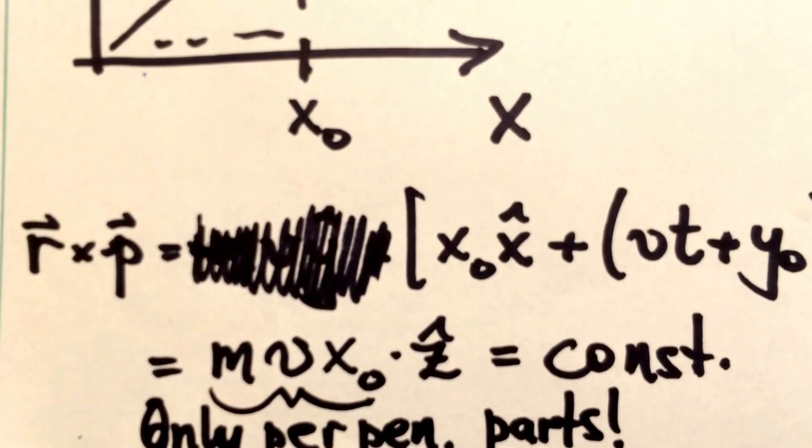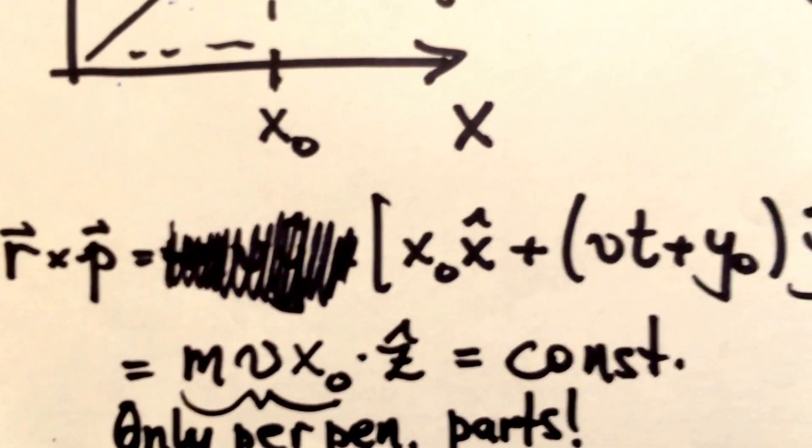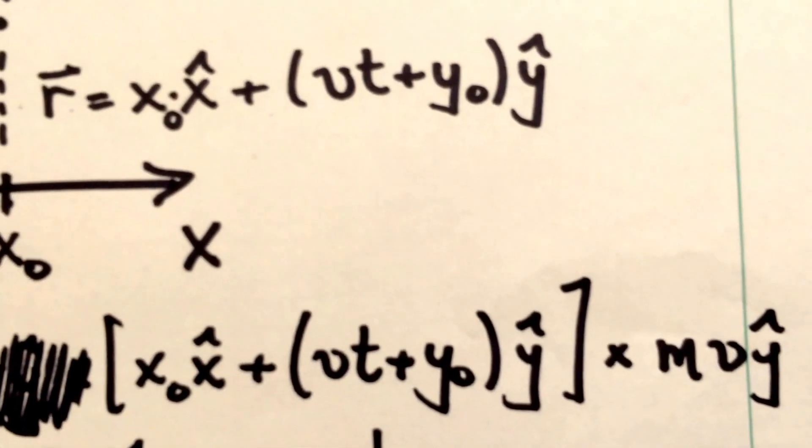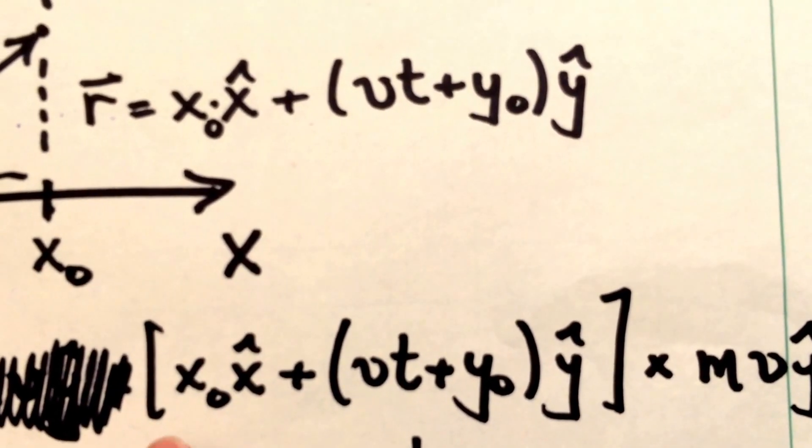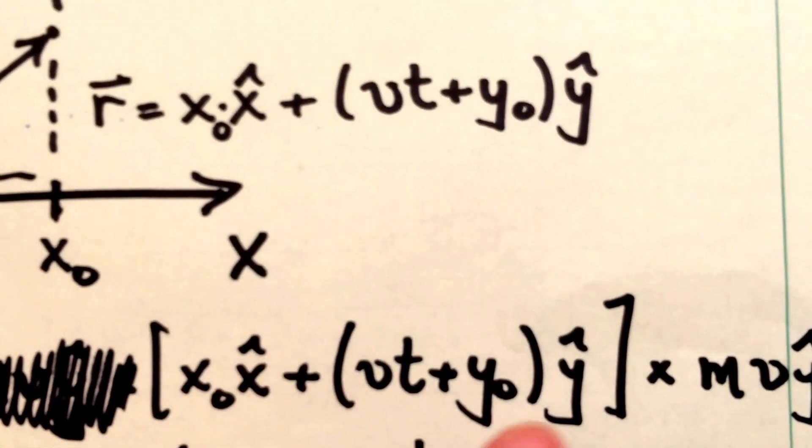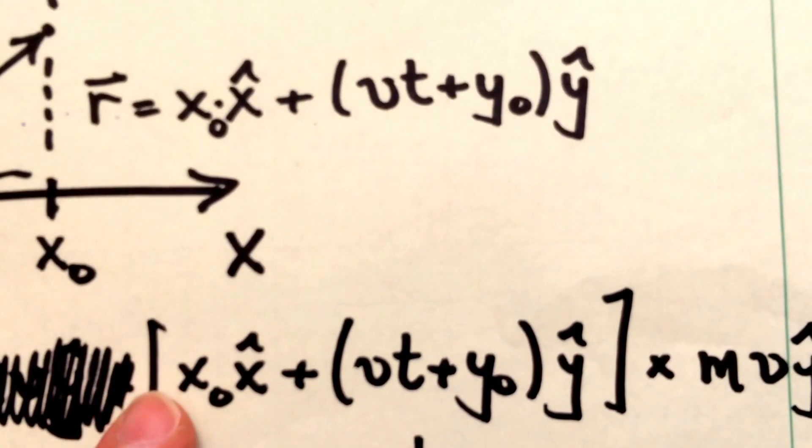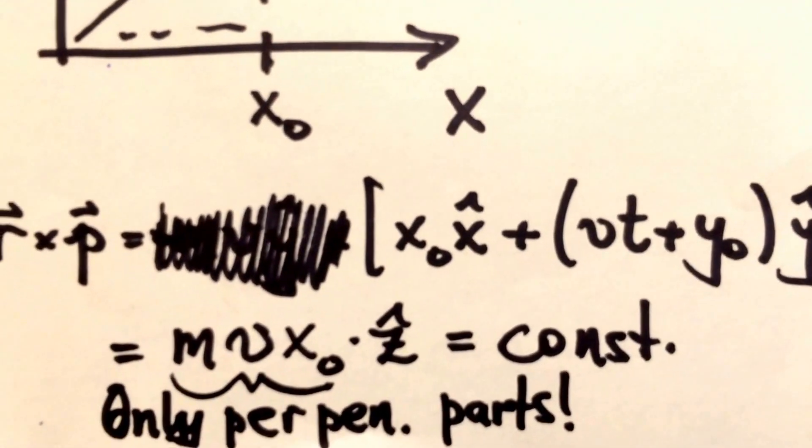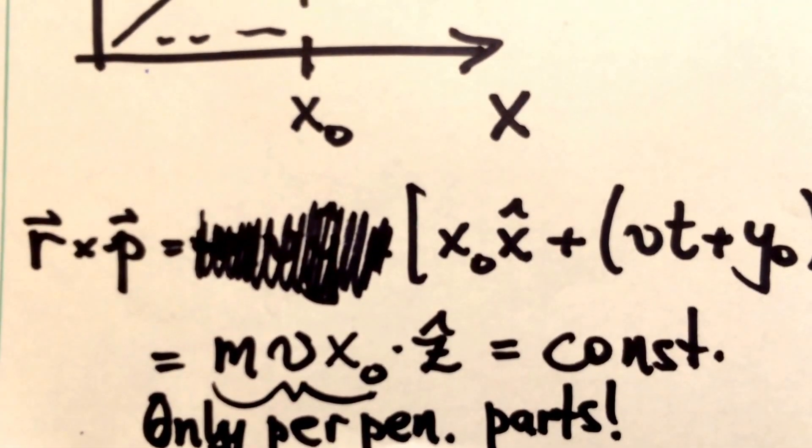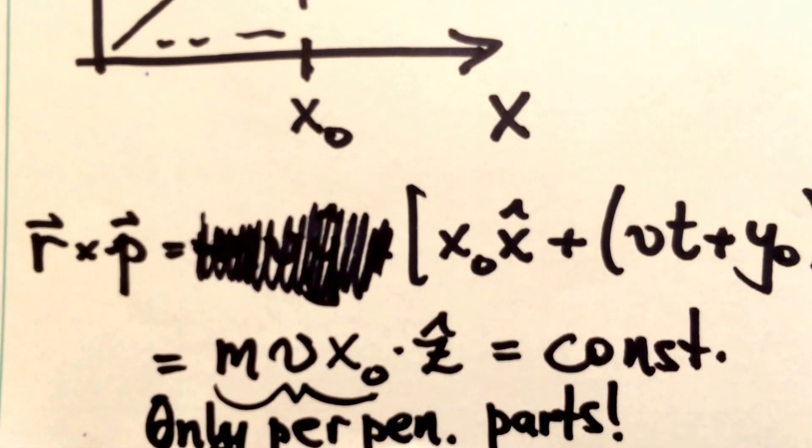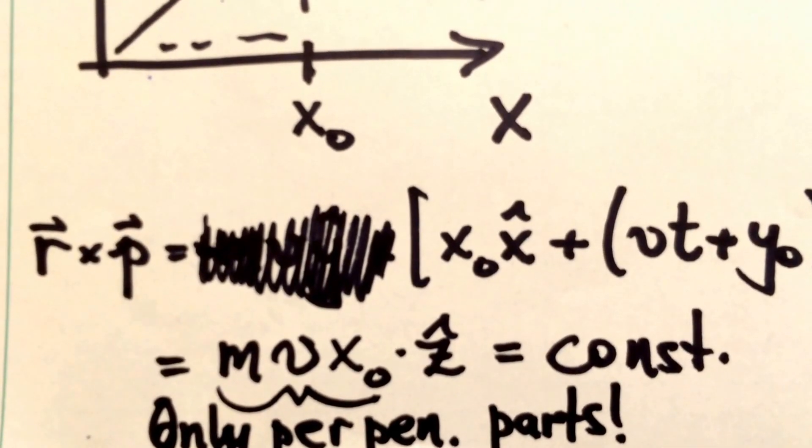So the only parts that survive the cross product are the portions of each vector that are perpendicular to one another. So we can see here y crossed into y hat, that's going to give us zero. So the only thing that we have left is x hat crossed into y hat, which gives us z hat. And so the angular momentum for a particle traveling in a straight line in this way is just mv x naught z hat.